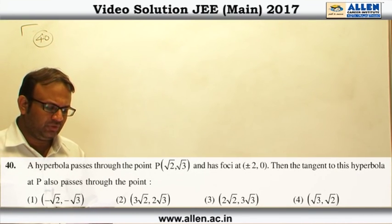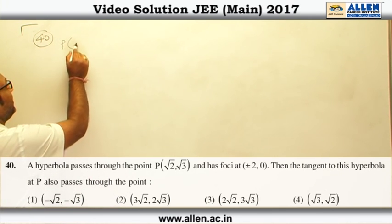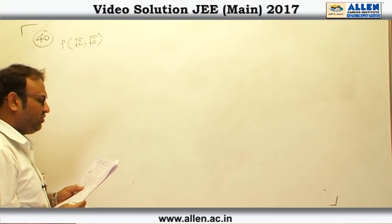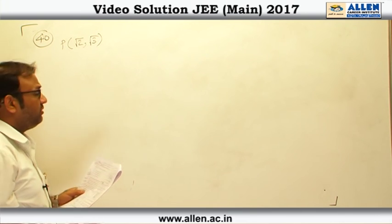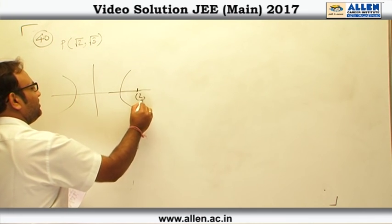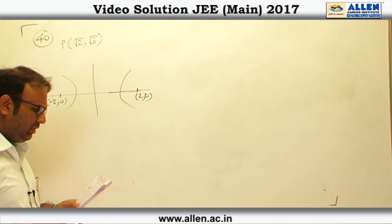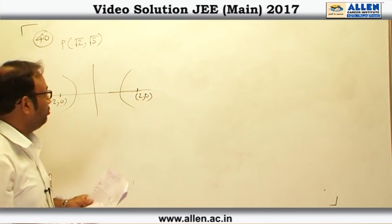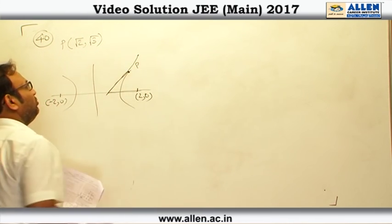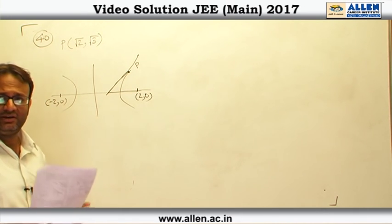In question number 40, it says a hyperbola passes through the point P root 2 comma root 3. We are given a point root 2 comma root 3 and it has foci plus minus 2 comma 0. The tangent to the hyperbola at P also passes through — so this is a point in the first quadrant. We have to basically write the tangent to the hyperbola and check which of the given options are lying on this particular tangent.